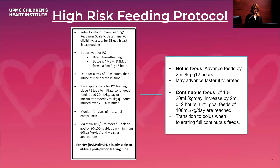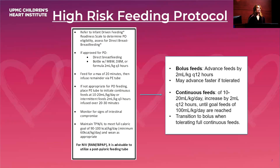Feeds are started very slowly. For intermittent feeds, that is two mls per kilo every three hours; for continuous feeds, between 10 to 20 mls per kilo per day. Advancement is also done very slowly, watching for signs of intestinal compromise. For bolus feeds, we increase two mls per kilo every 12 hours; for continuous, two mls every 12 hours, with a goal of 100 mls per kilo per day. TPN and lipids are used to meet caloric goals during that period, titrated down as feeds are advanced.